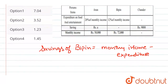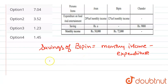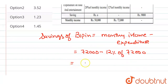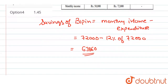हमें given है, जो उसकी monthly income है, वो 72,000 के equal है. And 12% वो खर्च करता है, किस पे? Food and entertainment पे 72,000 का. तो यह value कितनी आएगी हमारी? यह value है हमारी 63,360 के equal. यह उसकी Wipen की savings आ गई.